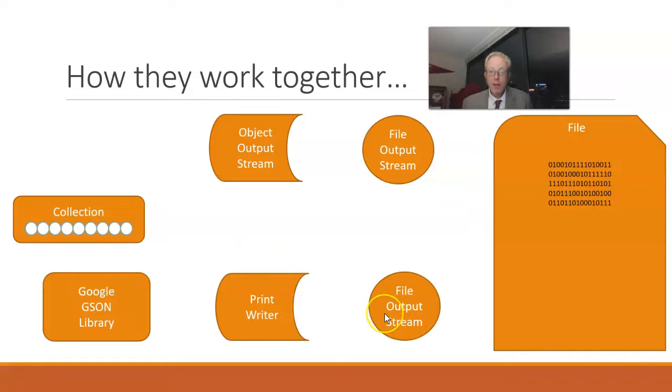Now for JSON, we'll still use that file output stream because we still need to write to a file, but we have a couple other things we're going to need to use. First of all, a print writer is typically used for writing character data or string data to a destination, and in this case we're connecting it with a file output stream.